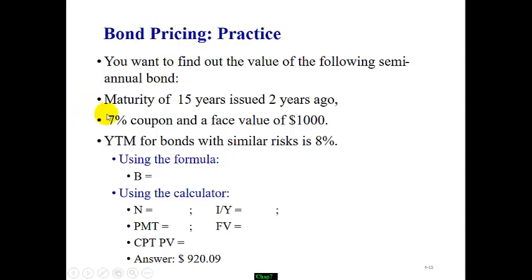Notice that in this case, the bond maturity is a 15-year bond but it was issued two years ago. So the remaining maturity is now 13 years.